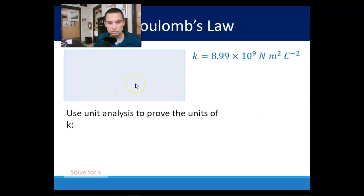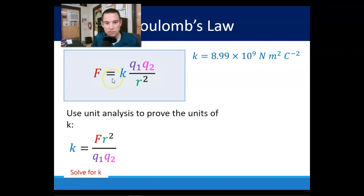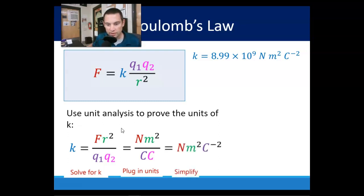Coulomb's law. Use unit analysis to prove the units of k. Solve for k. k is going to equal that, multiplying r squared on each side and then dividing q1, q2. So plugging in our units, we get newtons times meters squared, divided by Coulomb times a Coulomb, simplified out, is a newton times a meter squared per Coulomb squared. That's what it is. That's true.